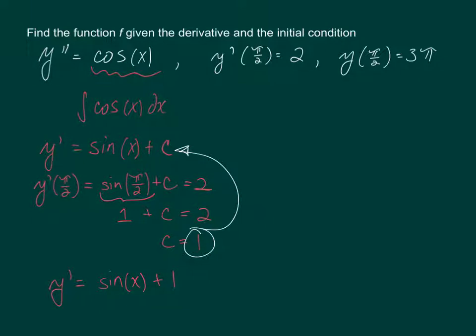Alright so we're still not back to the original function. We have done some work to go from a second derivative to a specific first derivative using this information. But we need to go back and actually find out what y is equal to. So again we have to figure out the antiderivative of this bit.